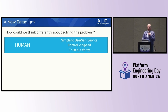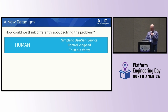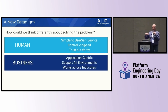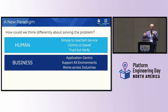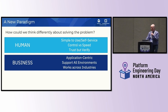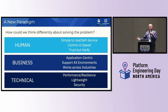So how can we think differently about solving this? As we looked at this at IBM, especially thinking with our customers in the hybrid cloud, we first wanted to think about the human problem — how can we build an experience that drives self-service, but also gives infrastructure ops and security teams the ability to implement control and trust but verify when teams are trying to establish networking? From a business perspective, we have to recognize this isn't just a container problem. Application-centric connectivity spans all environments, and it has to be performant, resilient, lightweight, and secure.